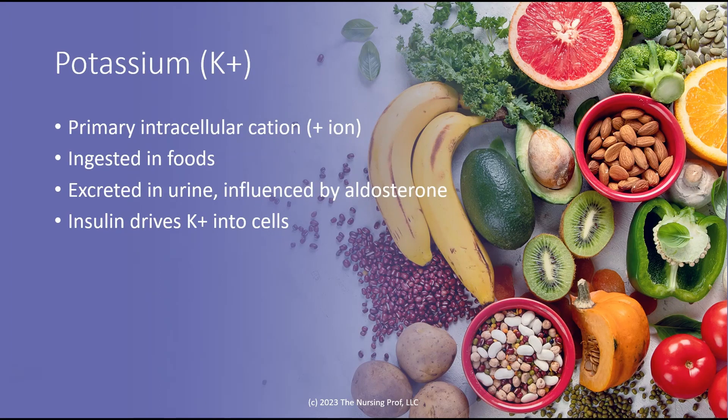Potassium is our major intracellular ion. Remember we talked about having this balance between positive and negative ions when we discussed sodium. Sodium is the major extracellular cation and potassium is the major intracellular cation. We get it from our food and it's excreted in urine. Typically, as long as you have normal renal function, you're just going to excrete excess potassium in the urine. Problems arise with inadequate ingestion of potassium, issues excreting urine, or too much urine as in diuresis. Insulin also has an effect, driving potassium into our cells.